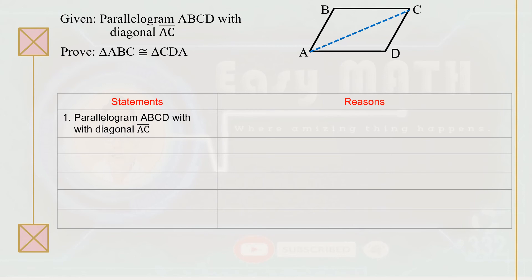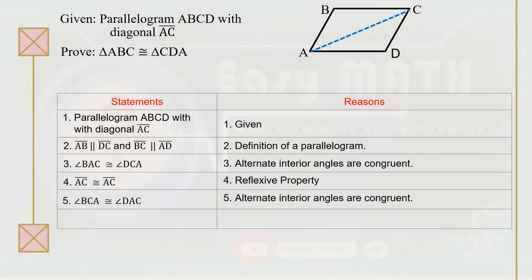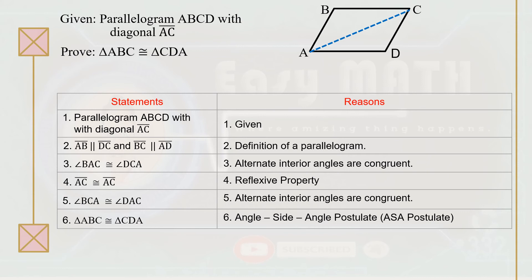Statement number three: angle BAC is congruent to angle DCA because they are alternate interior angles. Statement number four: segment AC is congruent to segment AC because of the reflexive property. Statement number five: angle BCA is congruent to angle DAC because they are alternate interior angles. Therefore, triangle ABC is congruent to triangle CDA because of the ASA postulate.